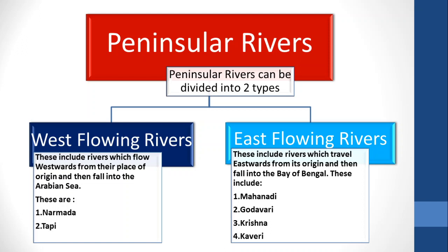West Flowing Rivers are Narmada and Tapi. East Flowing Rivers include rivers which travel eastwards from their origin and then fall into the Bay of Bengal. These include Mahanadi, Godavari, Krishna, and Kaveri.